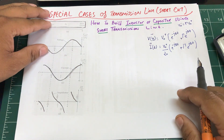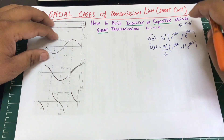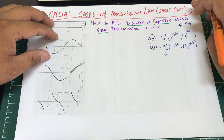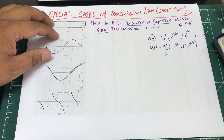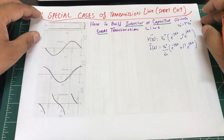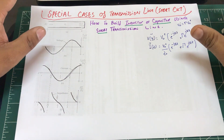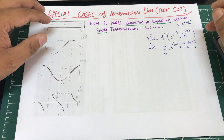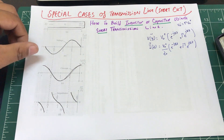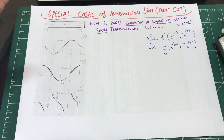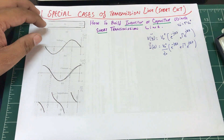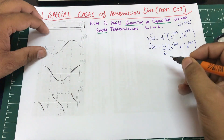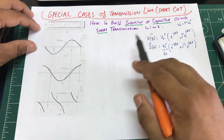Let's look at the short circuit scenario. We're going to find the impedance of a short circuit. Once I plot that impedance I can look at how to make devices — inductors or capacitors — out of it. Having a short circuit means you have a source connected at one side, which is your Z_in, and a short circuit at the load end.